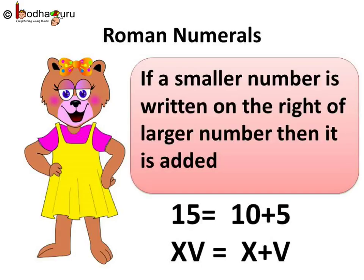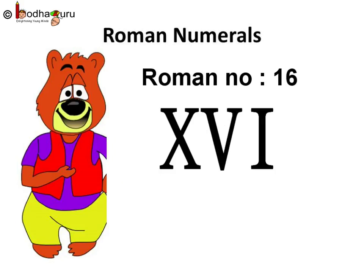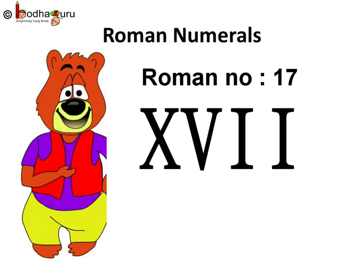Remember the golden rule: if a smaller number is written on the right of the larger number, then it is added. Hence, Roman 15 is X plus V, which is XV. Similarly, what is 16? It is 10 plus 6, so X and VI. 17 is 10 plus 7, so X and V followed by 2 I's.